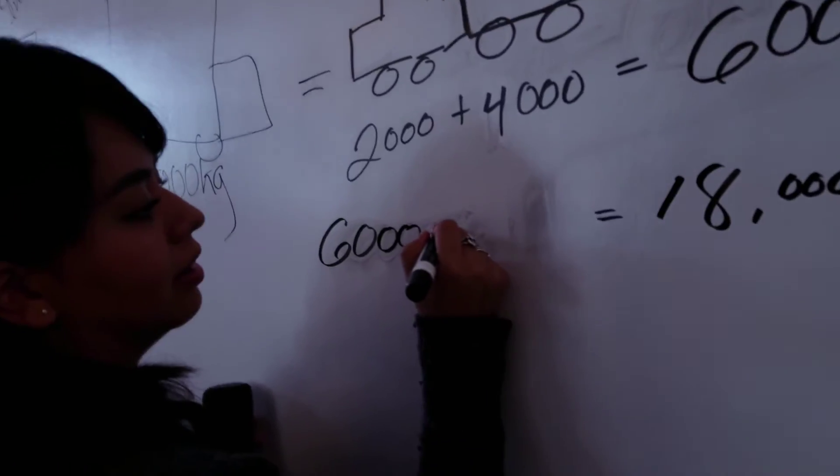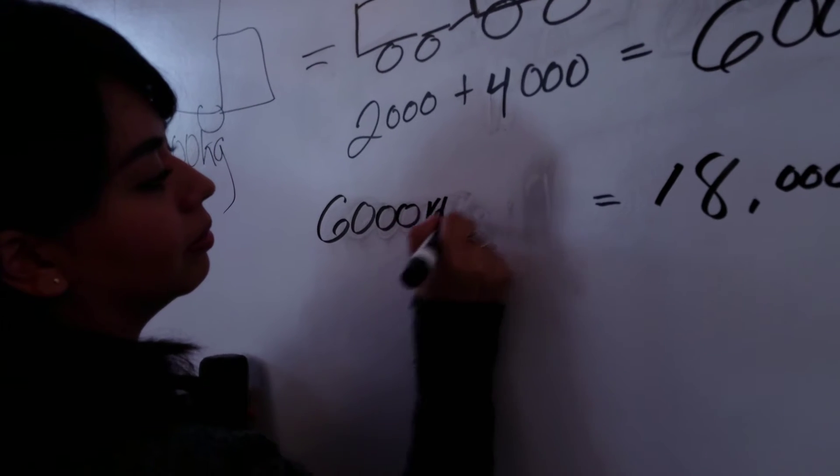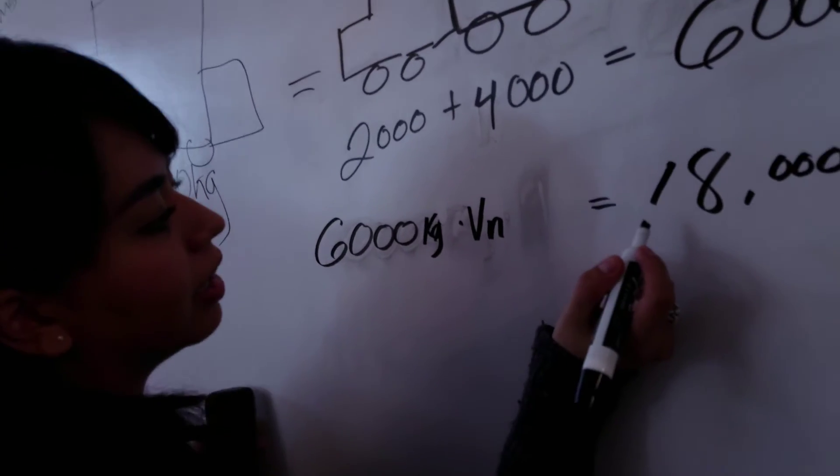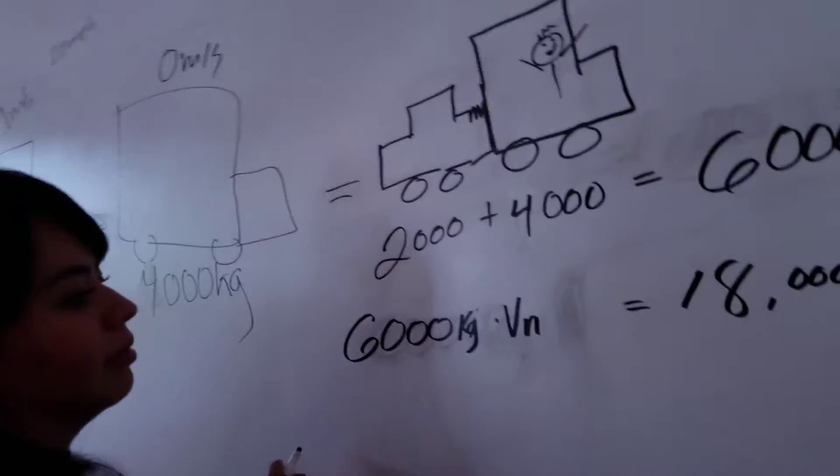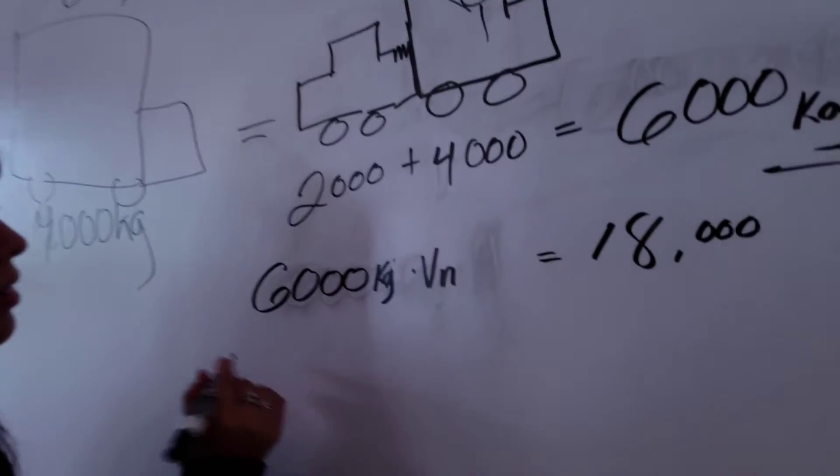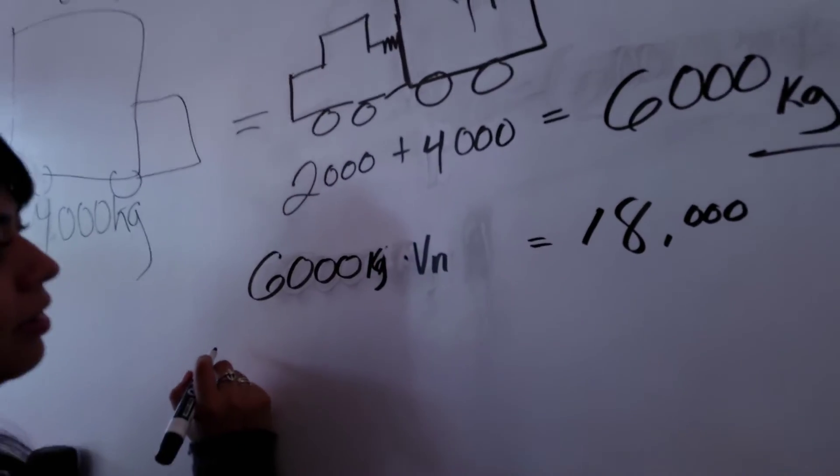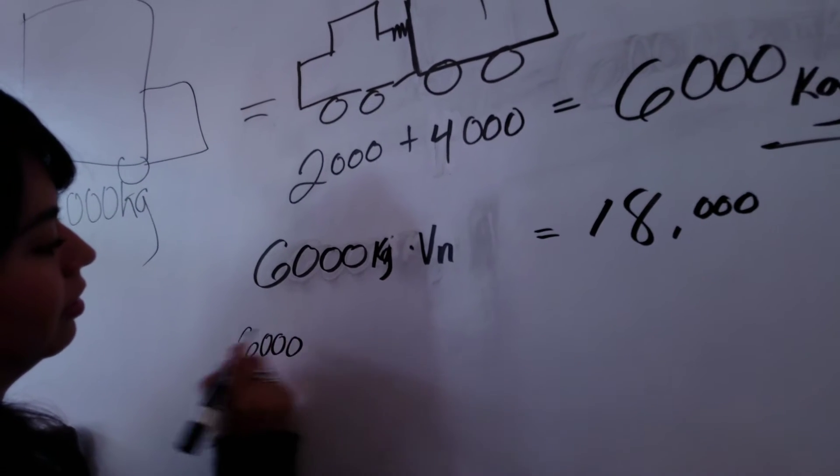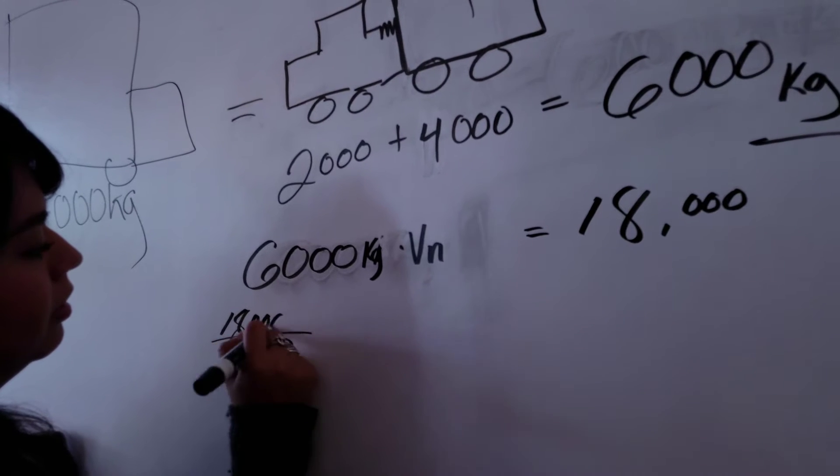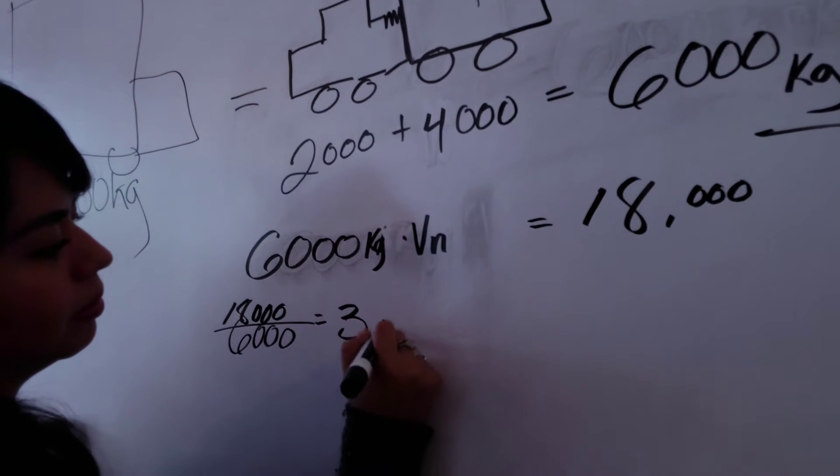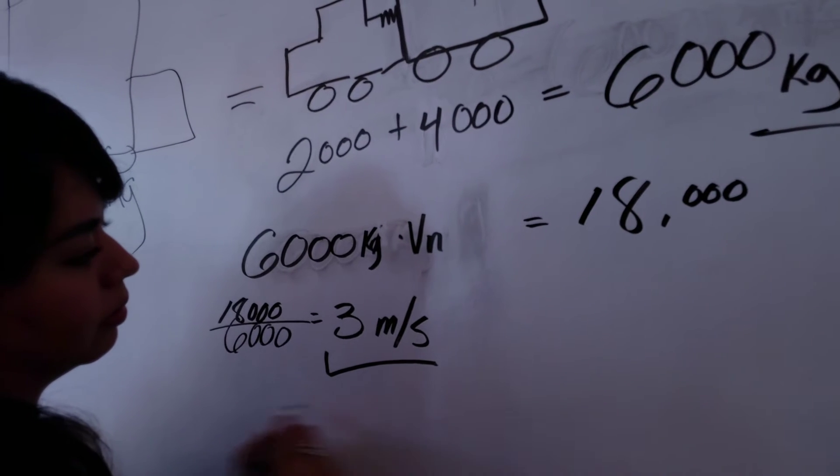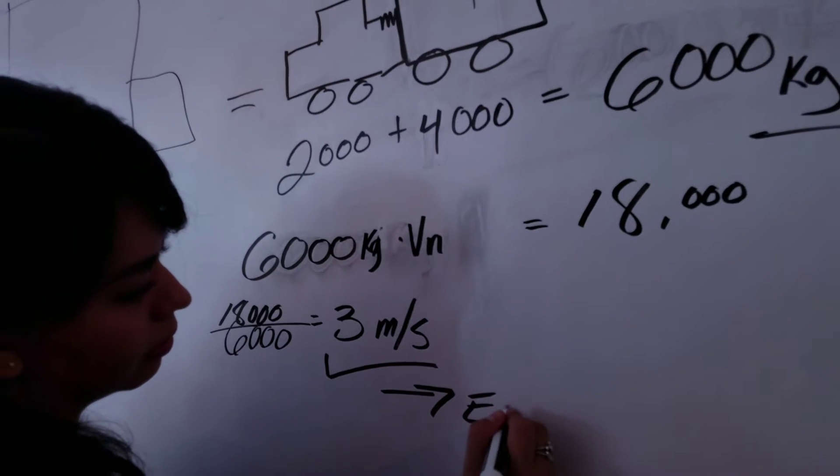So 6,000 kilograms, now we just solve for Vn, so 6,000 divided by 1,800, so 6 divided by 1,800 is 3. So 3 meters per second is our velocity, and that will be heading eastward, and that will be your final answer for that one.